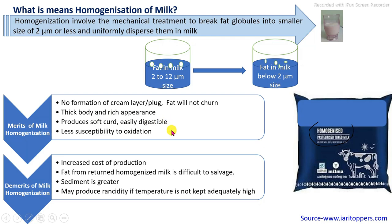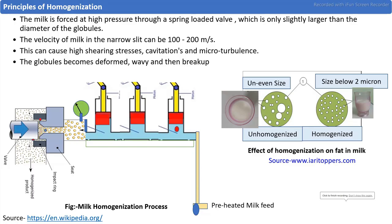Homogenization produces soft curd, makes milk easily digestible, and less susceptible to oxidation. Some demerits of homogenization include increased production cost, difficulty in separating fat from returned homogenized milk, greater sediment formation, and it may prove rancid if the temperature is not kept adequate.